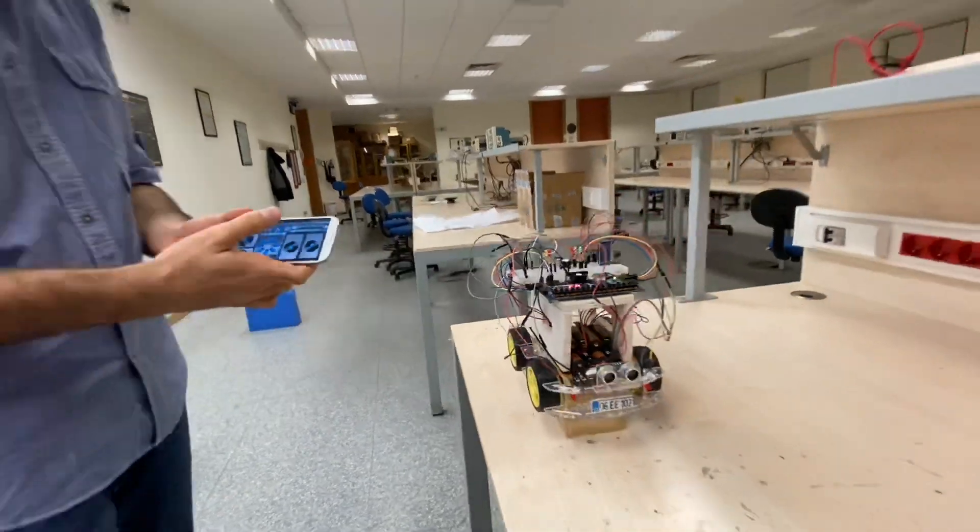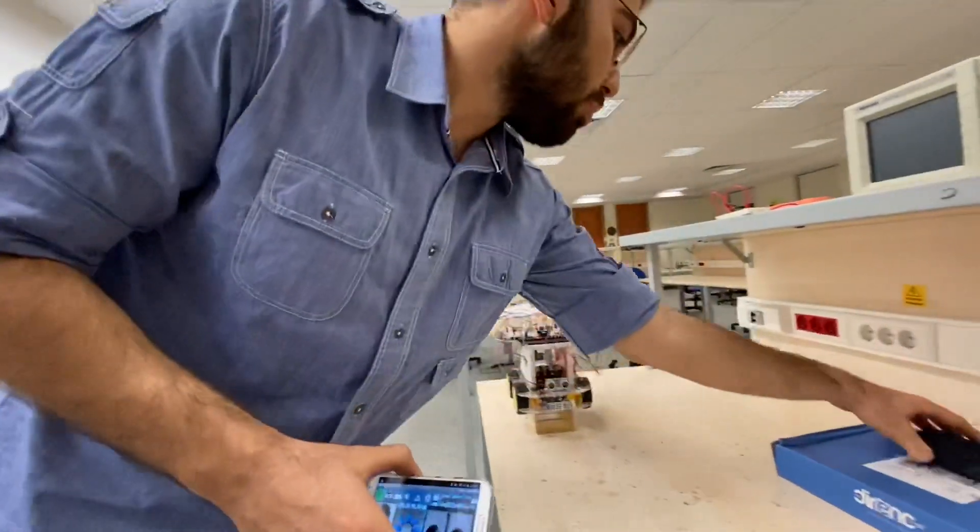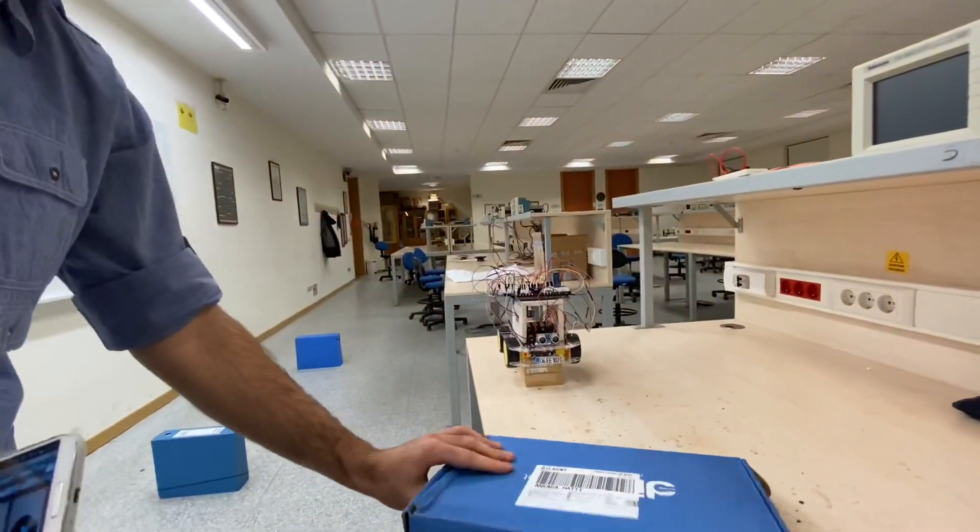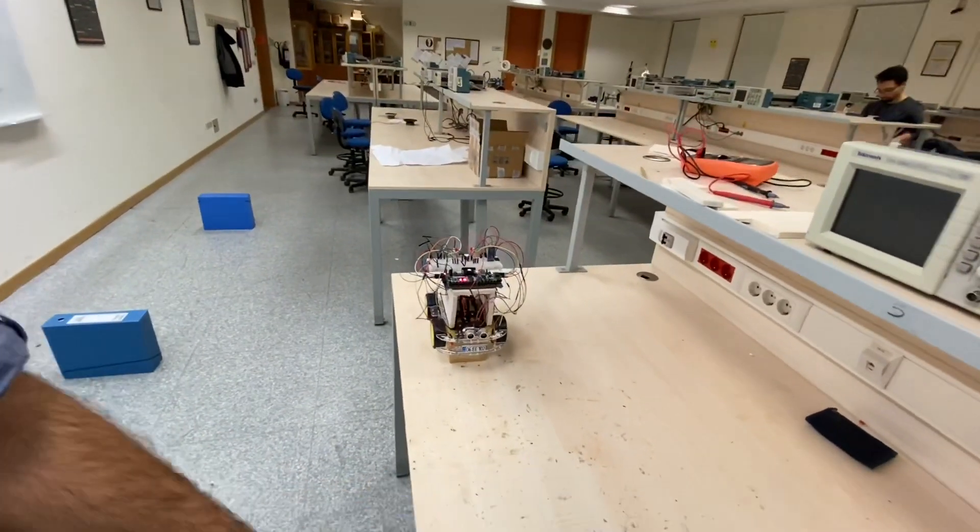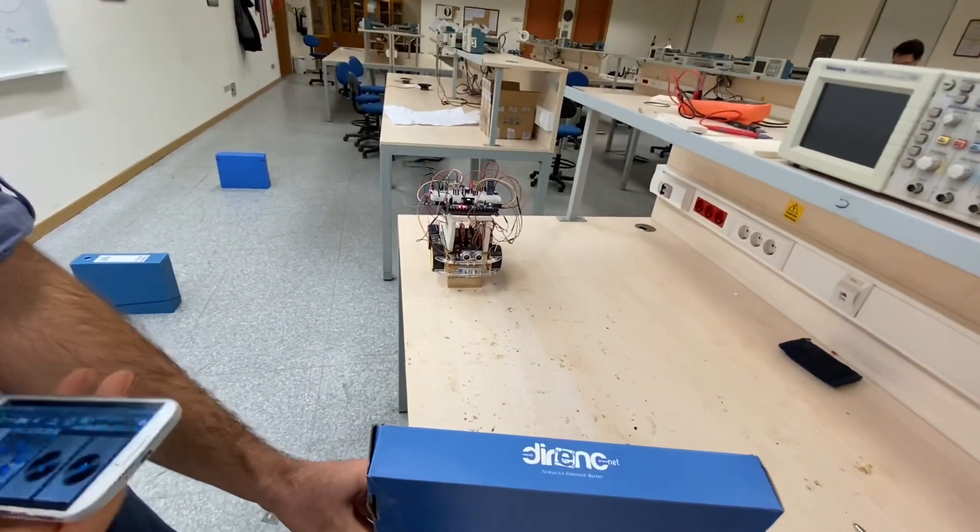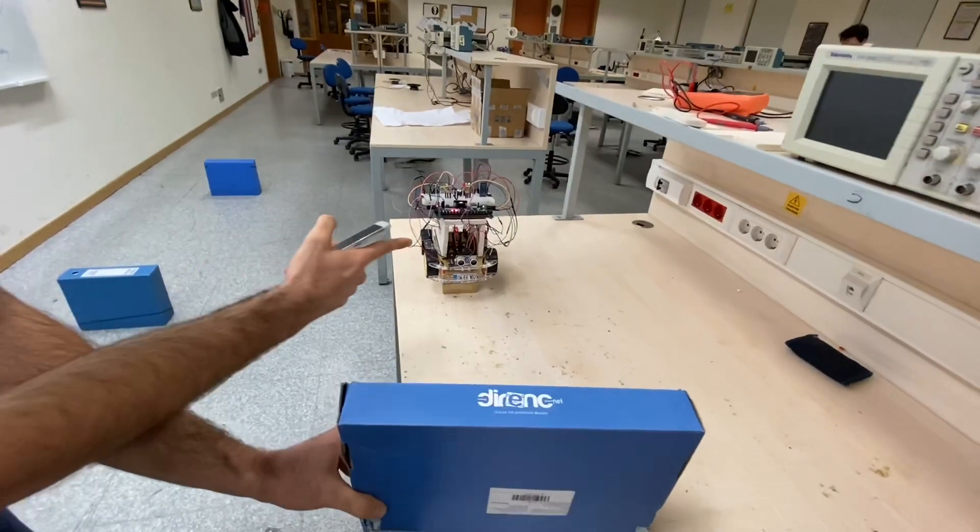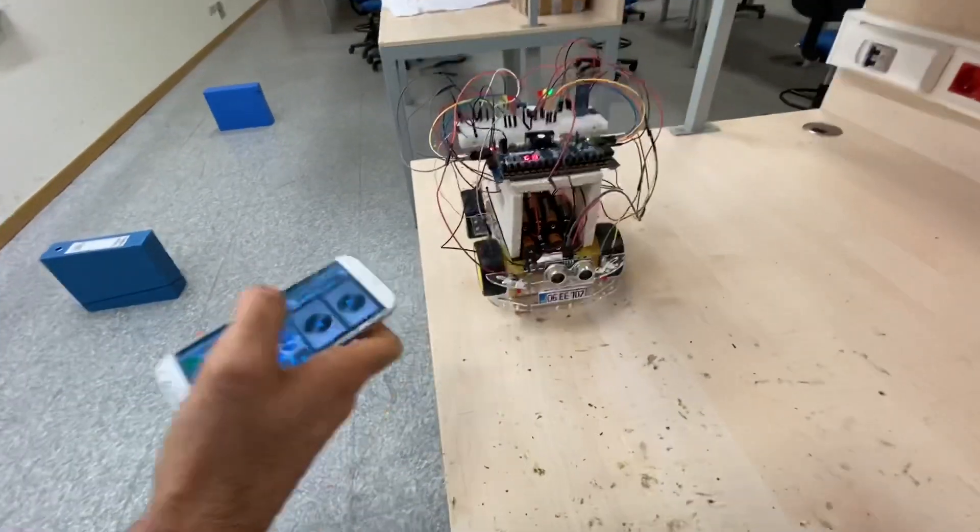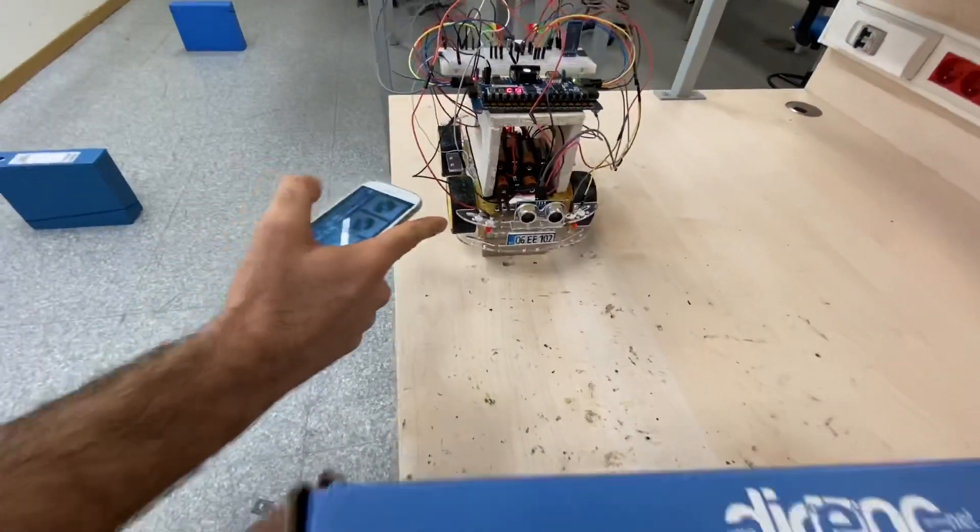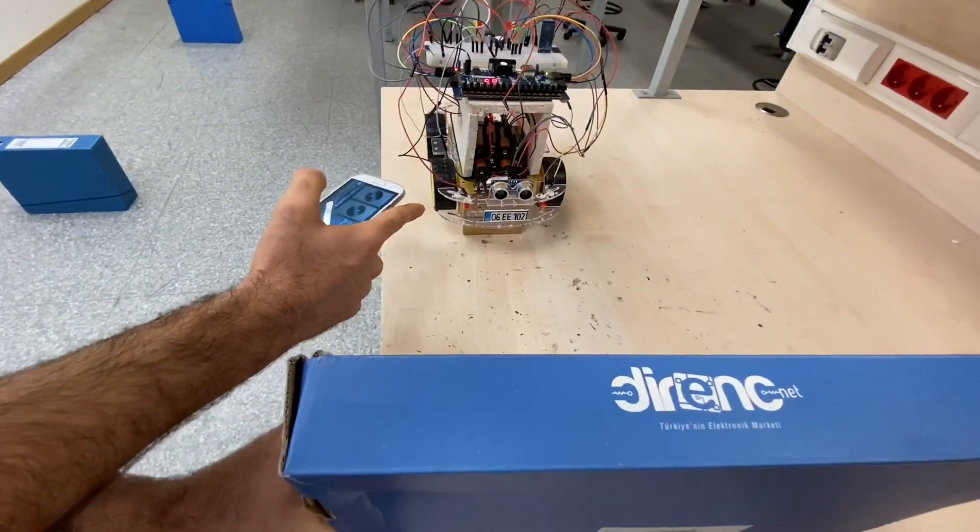And also, I added back lights to warn the obstacle, car, or person coming from behind. So look, this is the back lights. It is blinking to warn the obstacle or person.